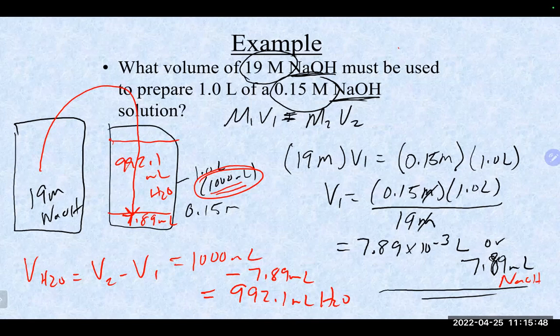To summarize: if you solve for V₁ it's the volume of the more concentrated solution; if you solve for V₂ it's the total volume of the diluted solution; and if you solve for M₂ it's the concentration of the more dilute solution.